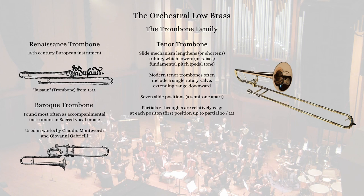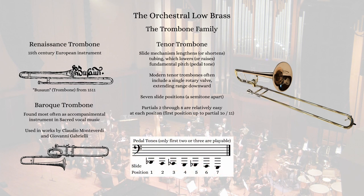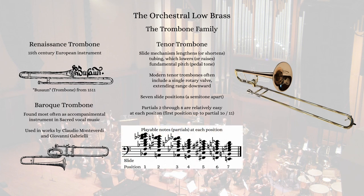There are several different types of trombones, and the most common is the tenor trombone. Originally a valveless instrument, the modern construction often features a single rotary valve called the F-trigger, which extends the range downward. There are seven slide positions on the trombone, and moving the slide outward to the next position lowers the pedal tone by a half-step. Here are the seven pedal tones on the tenor trombone, and each position allows for the notes of the harmonic series of each pedal tone. Generally, only partials 2 through 7 or 8 are commonly played, though professional trombonists can extend the first position up to the 10th or 11th partial.